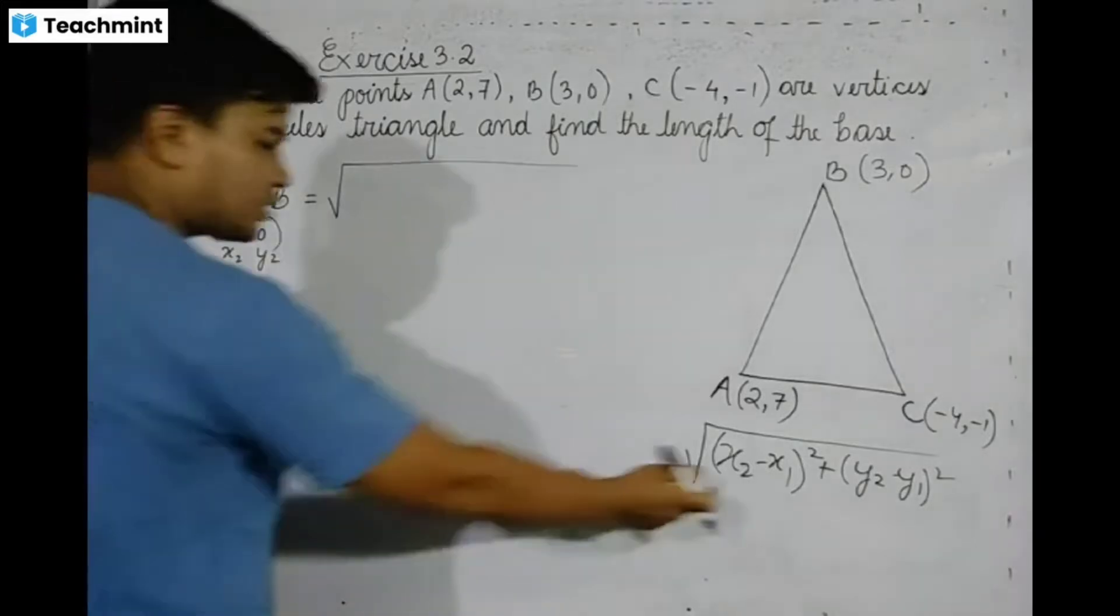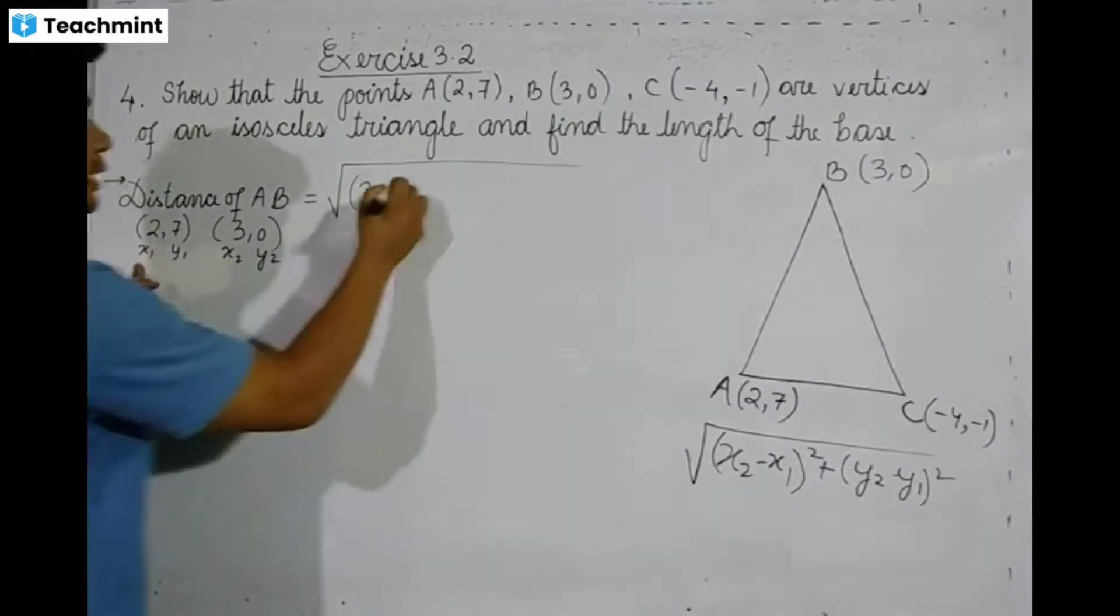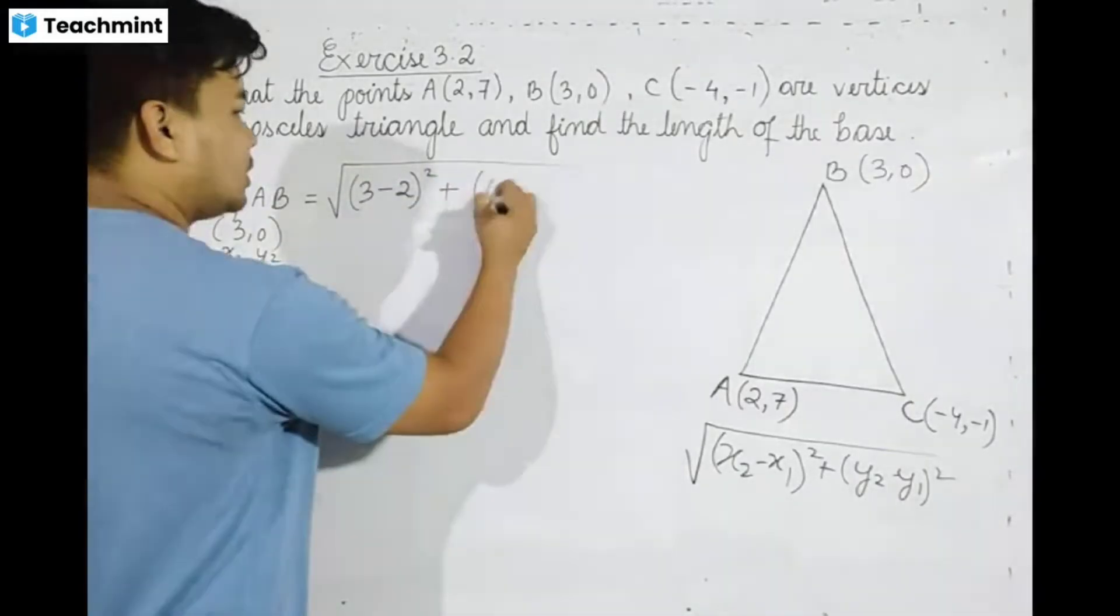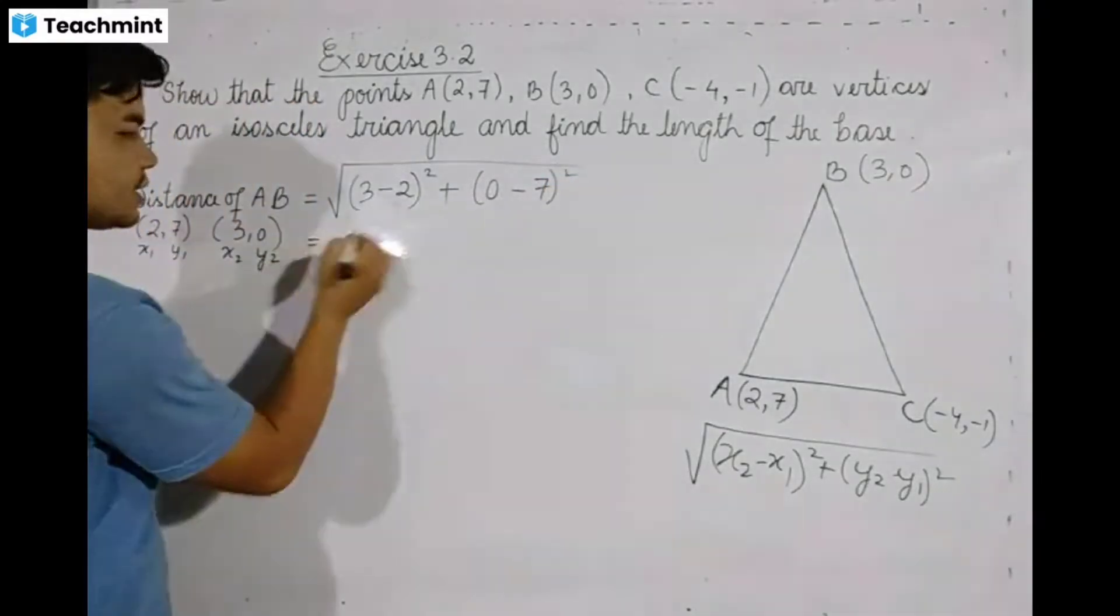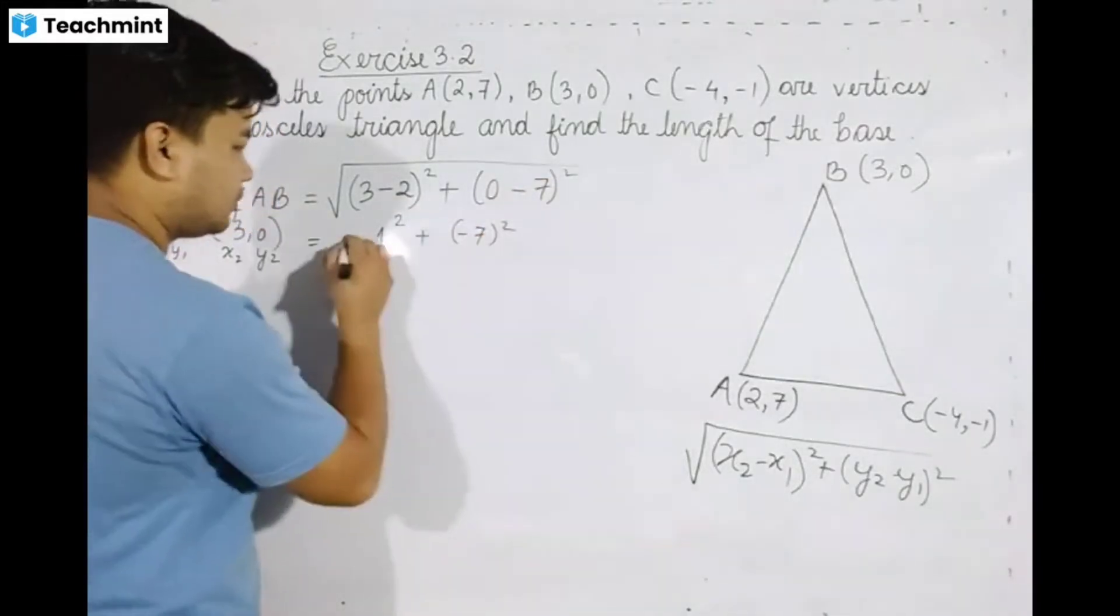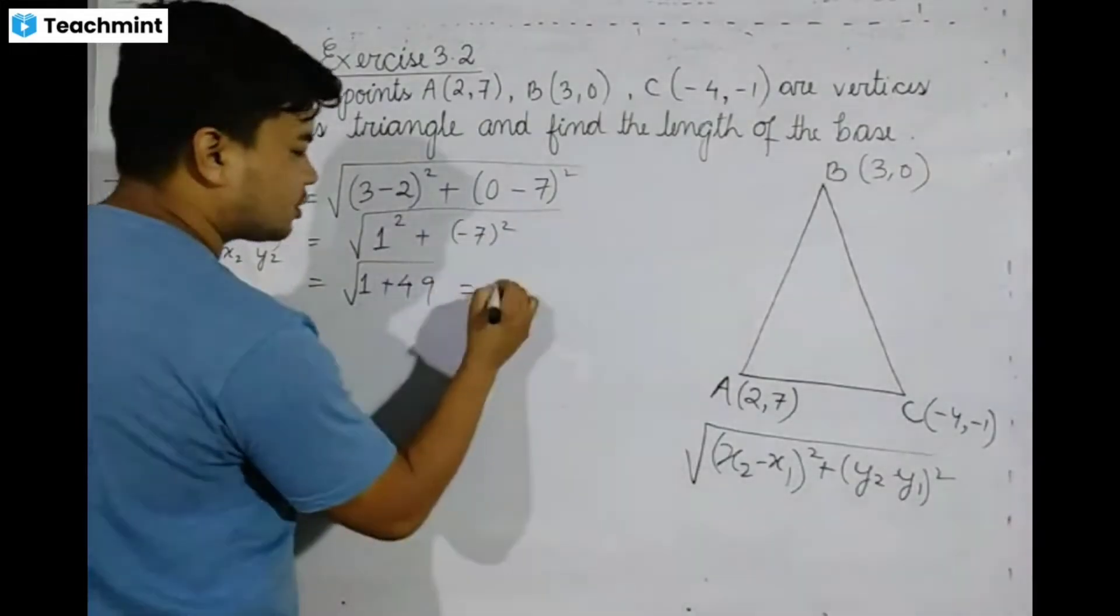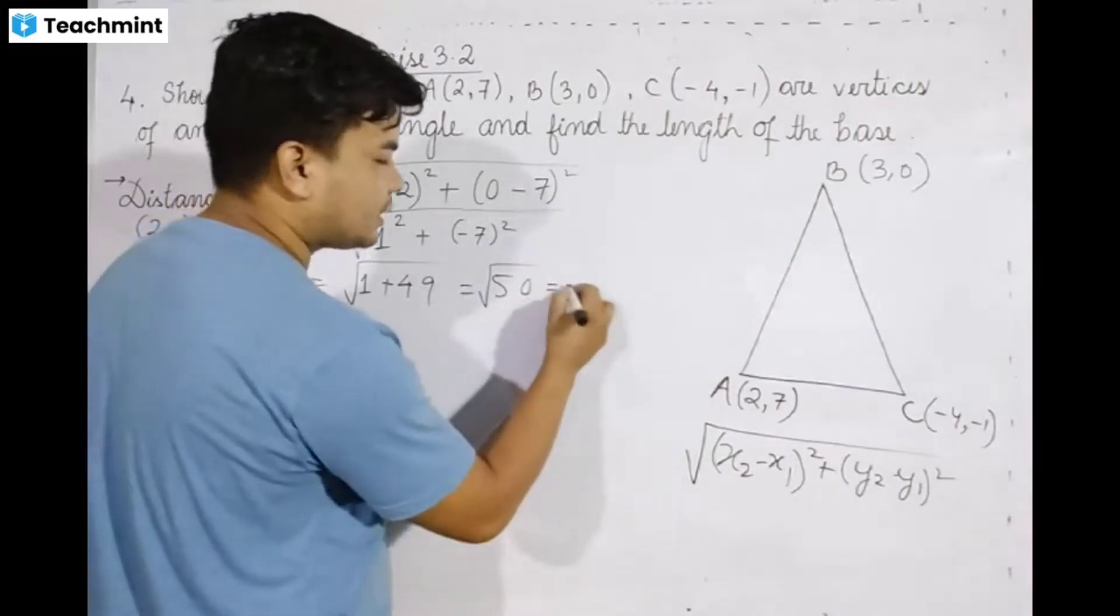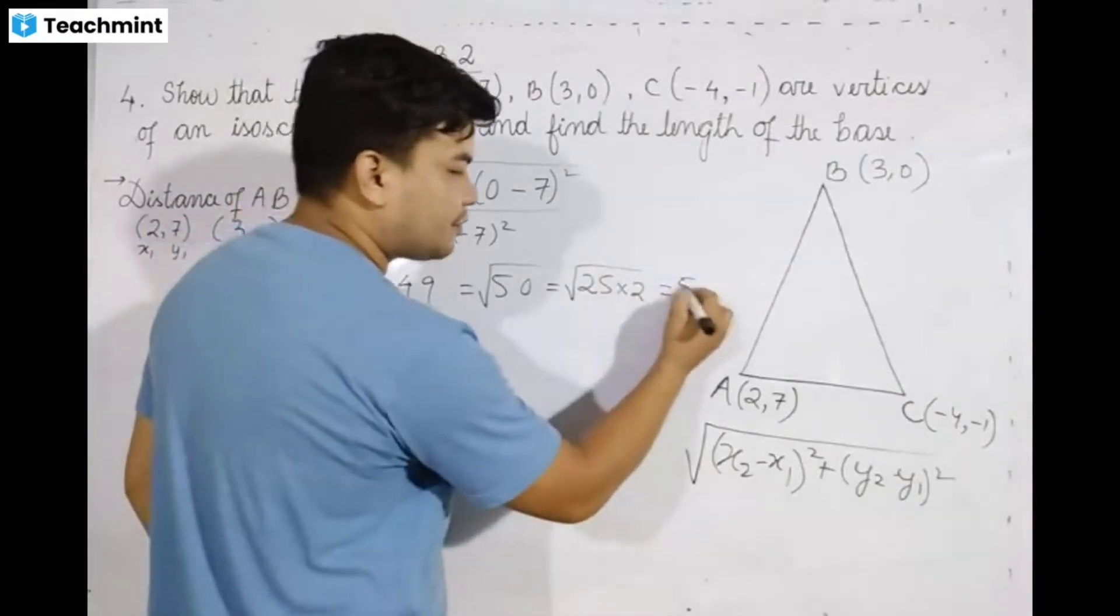Distance of AB equals square root of (3 - 2)² plus (0 - 7)². This is (1)² plus (-7)² = 1 plus 49 = square root of 50, which equals square root of 25 times 2, which is 5√2.